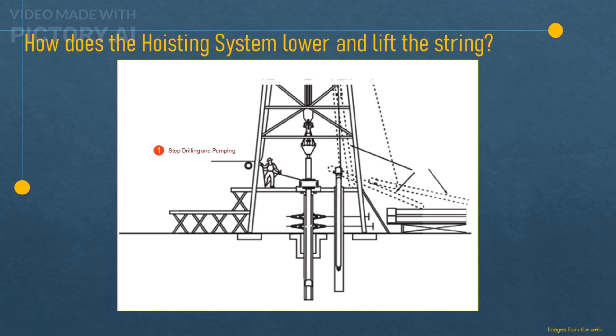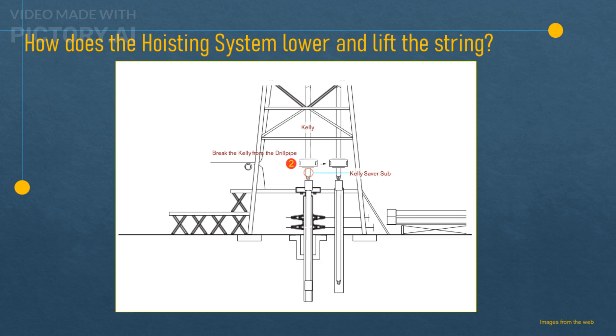Step 1. You stop the rotary table, pick up the kelly until the connection at the bottom of the kelly saver sub is above the rotary table, and stop pumping. Step 2. You set the drill pipe slips in the rotary table to support the weight of the drill string. You then break the connection between the kelly saver sub and first joint of pipe, and unscrew the kelly. Step 3. You swing the kelly over to the next joint of drill pipe which is stored in the mouse hole, an opening through the floor near the rotary table.